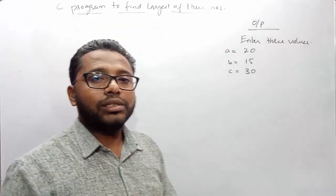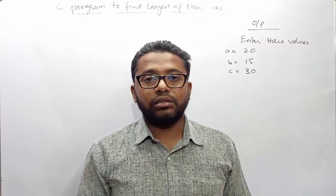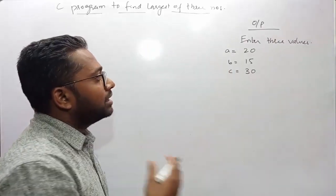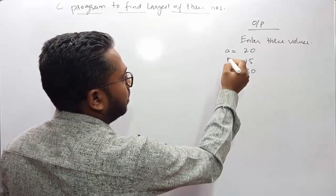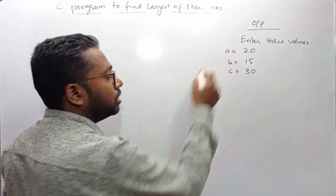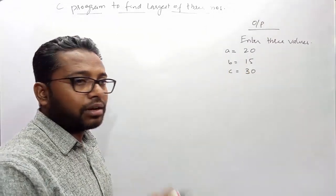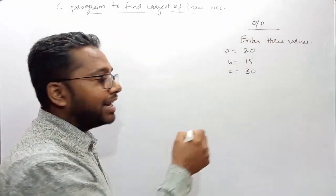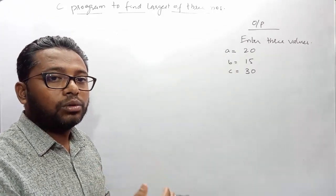After making the evaluation, the program will display which number is the largest. I'll be using an if-else-if branching statement with the greater-than relational operator. First, I'll check whether 'a' is greater than 'b', and using the AND operator, also check if 'a' is greater than 'c'. If both conditions are true, then 'a' is the largest.